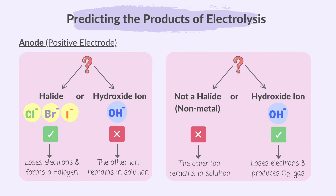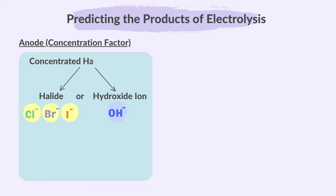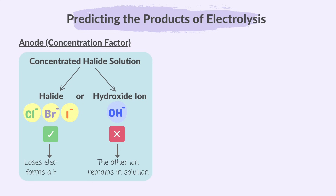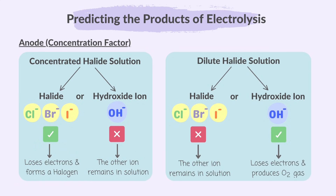The other negative ion remains in the solution. There's another factor to consider: the concentration. If it's a halide in concentrated solution, then the halogen is produced at the anode. If the halide is in a dilute solution, oxygen will be produced.